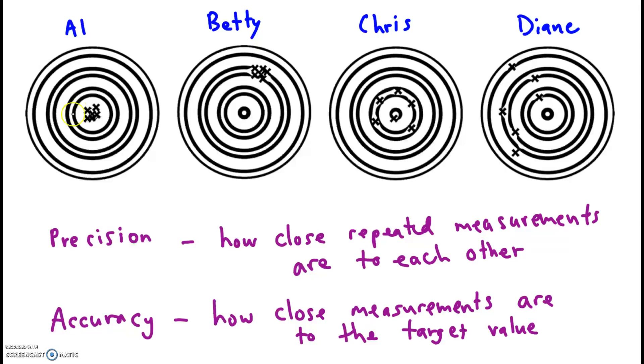So, who's precise? Al is precise. See how close together his measurements are? He's highly consistent. And Betty is also very precise. Chris, I would not say Chris is precise, and definitely not Diane.